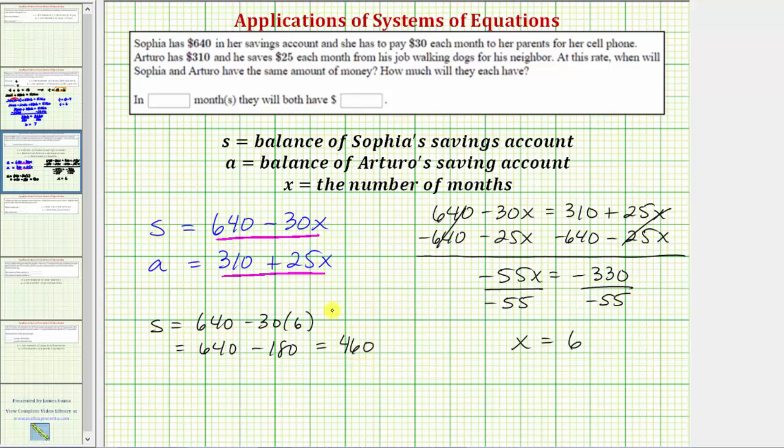Let's also make sure we get the same balance for Arturo's savings account. So we have A equals 310 plus 25 times 6 which is equal to 310 plus 150 which again is 460.